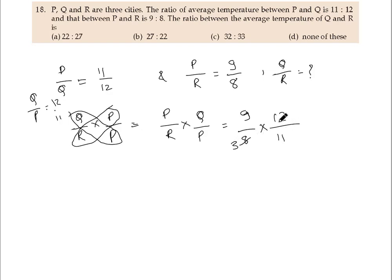12 by 11. If we cut by 4, this becomes 2 and this becomes 3. 9 into 3, 27 by 22.